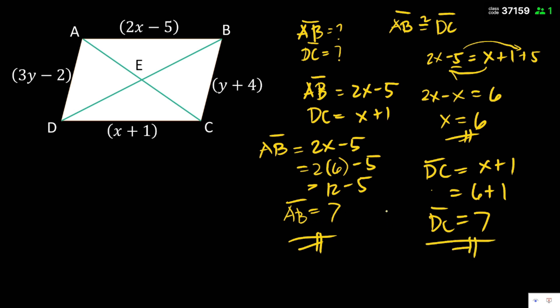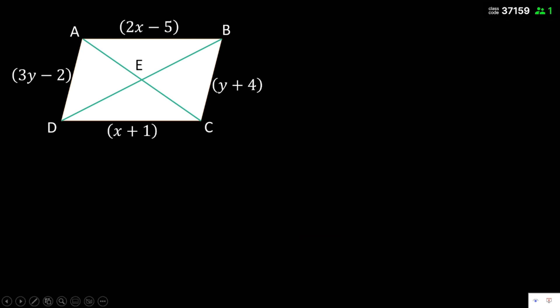Meaning, congruent AB and DC. So, the value of AB is 7 and the value of DC is also 7. Then, next, solve the value of AD and BC. Then, AD, the given expression is 3y minus 2. And, BC is y plus 4. Then, AD is congruent to BC.